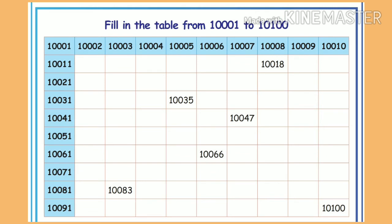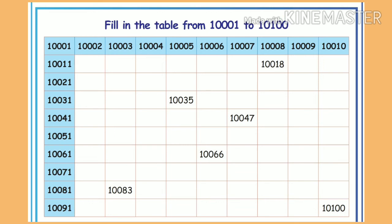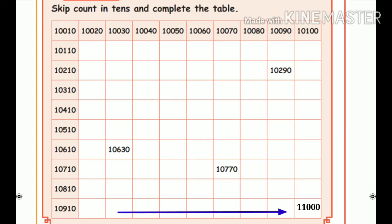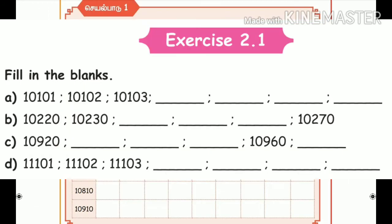There is a table to fill using numbers from 10,001 to 10,100. You fill in 10,012, 10,013, 10,014 and so on. Next, skip count in 10s to complete the table: 10,100 plus 10, plus 20, plus 30, plus 40 — continuing until you reach 11,000. Fill this table using skip count in 10s.